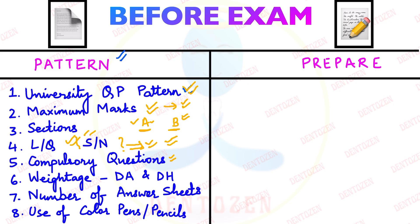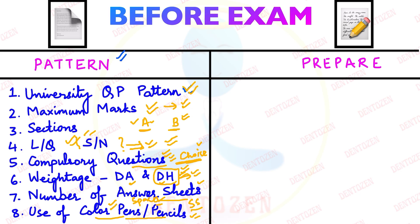You must know whether choice is given or not — if you don't know, you might attempt all questions and run out of time for compulsory ones, losing marks. If dental anatomy and dental histology have equal weightage, prepare both equally; in some universities dental histology has more marks so prepare it more strongly. Number of answer sheets matters because if no supplementary sheets are given, space out your answers carefully. If color pens are allowed, you can highlight important points and present your answers very well.